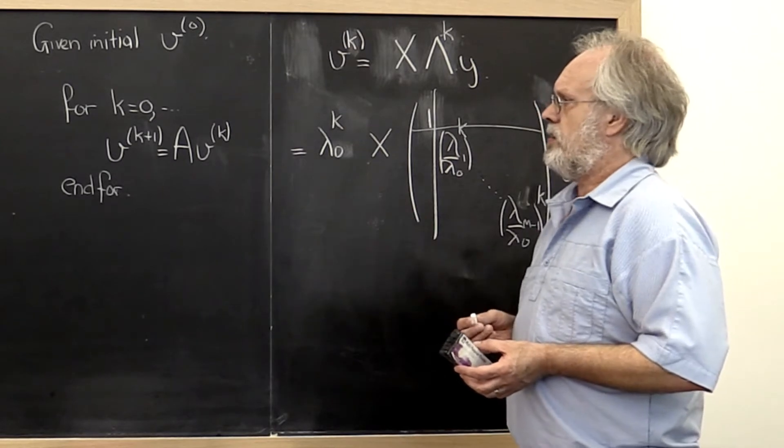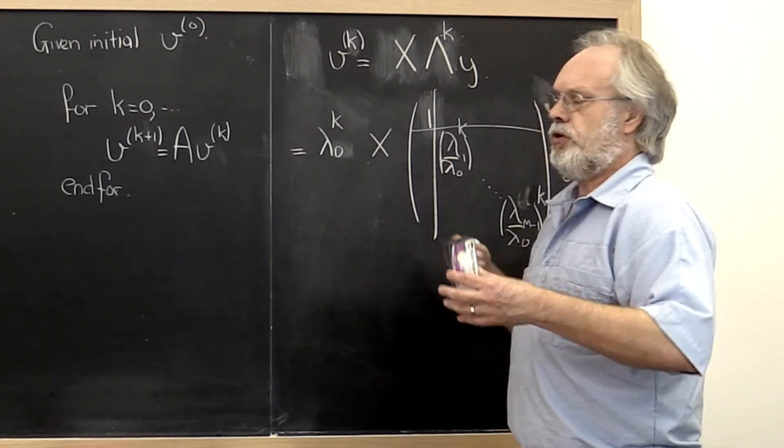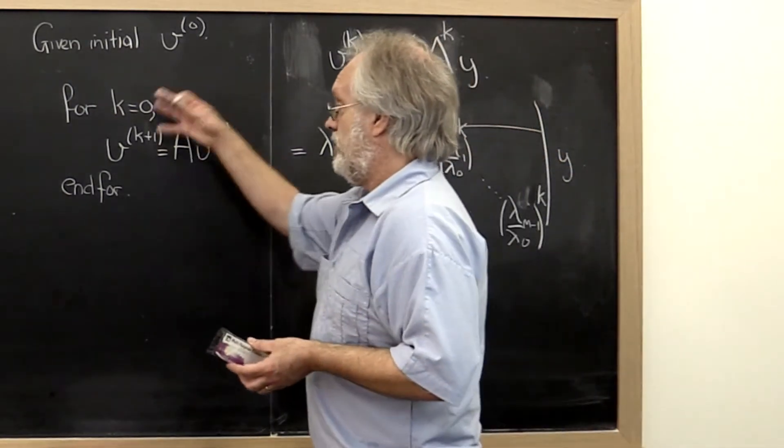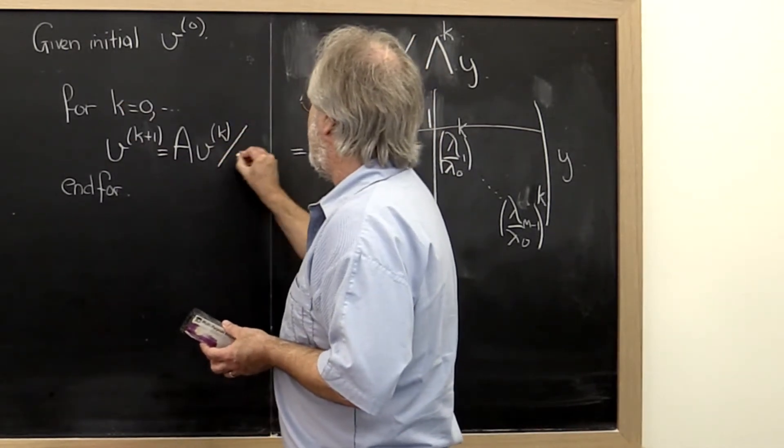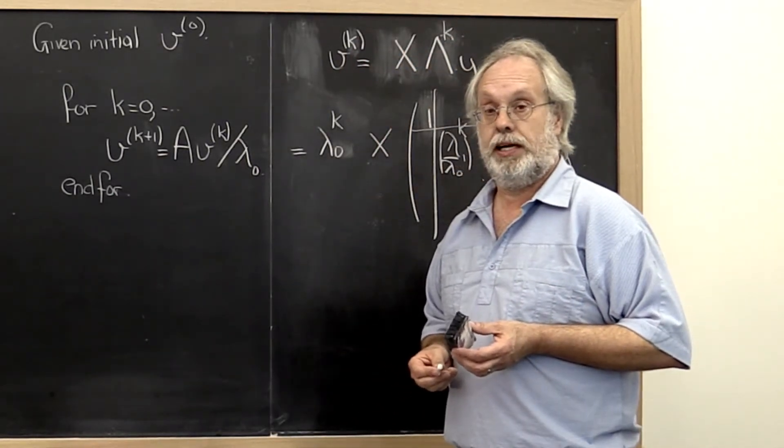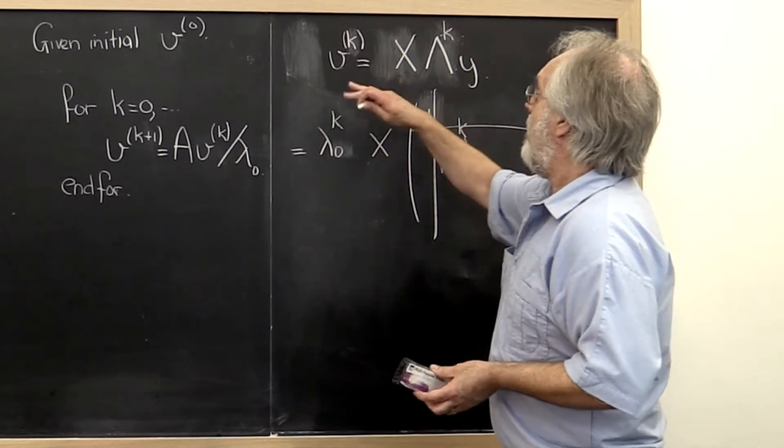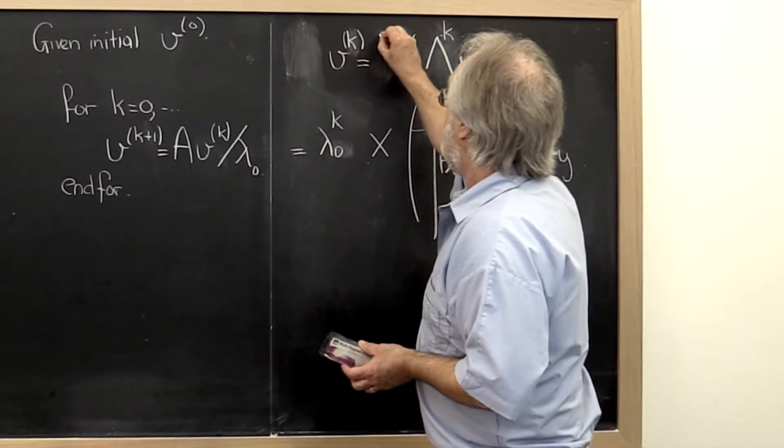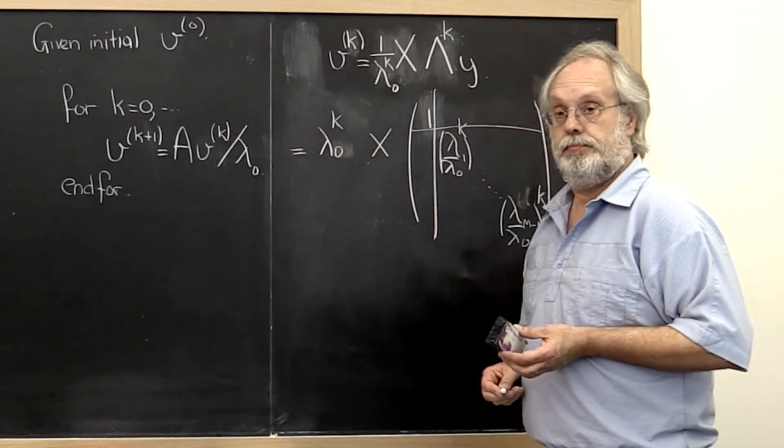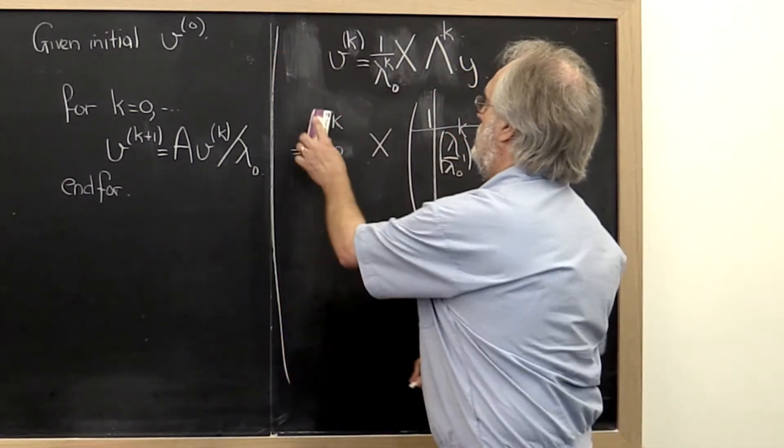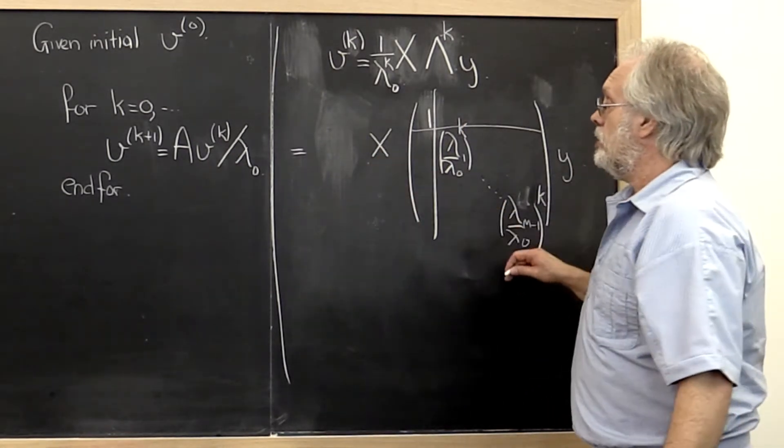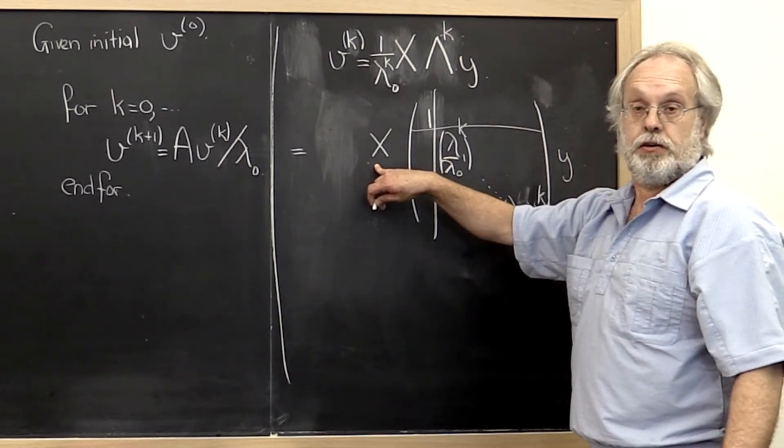So how can we fix this algorithm in order to keep the vector from growing arbitrarily large? Well, we could during every iteration simply divide by lambda zero. If we did that, then our kth vector would actually be equal to 1 divided by lambda zero to the kth power. And therefore it would actually equal to this right here. And lo and behold, it would converge to our vector x0 that we wanted.